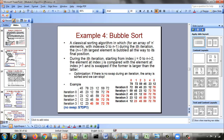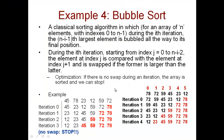Looking at the worst case scenario example, we had 6 elements and the iteration numbers go from 0, 1, 2, 3, 4. So for an array of 6 elements, you will have 5 iterations. In general, for an array of n elements, you will have to go through n minus 1 iterations at worst case.